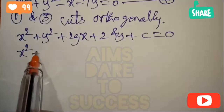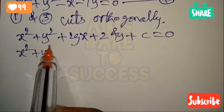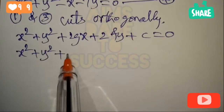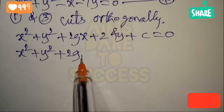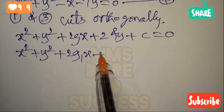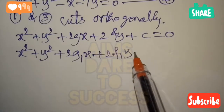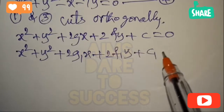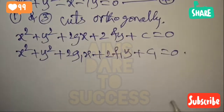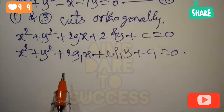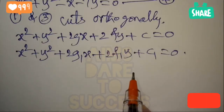The standard form is x² + y² + 2g₁x + 2f₁y + c₁ = 0. We compare equation 1 with this standard form to identify the corresponding coefficients.